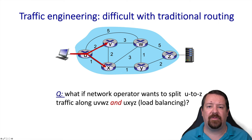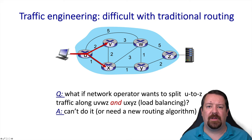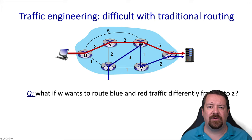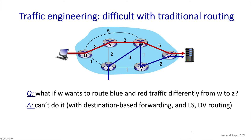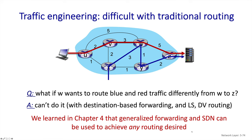What if instead of just moving that traffic flow, the operator actually needs to split it to divide the load over two different paths? This becomes yet more challenging and would require additional configuration beyond what a typical routing protocol could achieve, so a load balancing configuration would typically be constructed outside of the routing protocol. Here's another example where two flows need to be separated between W and Z — this is not achievable with destination-based forwarding. However, with generalized forwarding, we can look at other fields and achieve such an outcome.